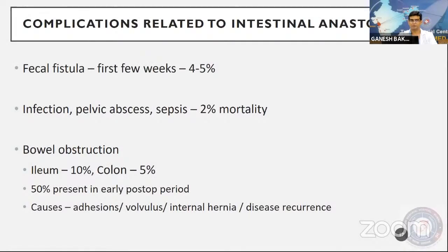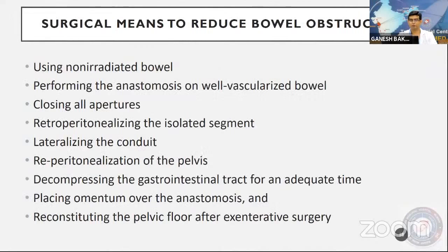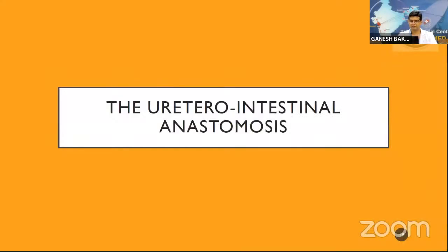Principles of intestinal anastomosis: adequate exposure; maintain good blood supply to severed bowel ends; prevent local spillage of enteric contents; accurate apposition of serosa to serosa; do not tie sutures too tight to strangulate the area; and realign the mesentery of the two bowel segments. Complications include fecal fistula in 4-5%, infection, pelvic abscess, and bowel obstruction — ileum 10%, colon 5%, with 50% presenting in the early post-operative period due to adhesions, volvulus, or internal hernia.